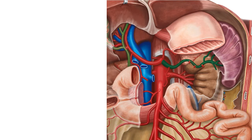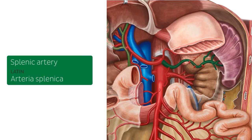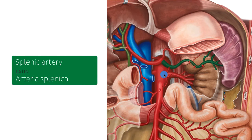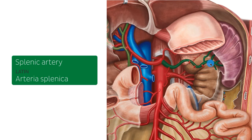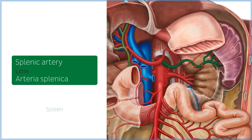The first artery we'll look at is the splenic artery. Here we can see the start of the abdominal aorta after it pierces the diaphragm. The first main artery that branches off the abdominal aorta is the celiac artery, which then gives off three of its own branches. The one branching to the left here is the splenic artery. This artery is the largest branch of the celiac artery and it supplies the spleen.